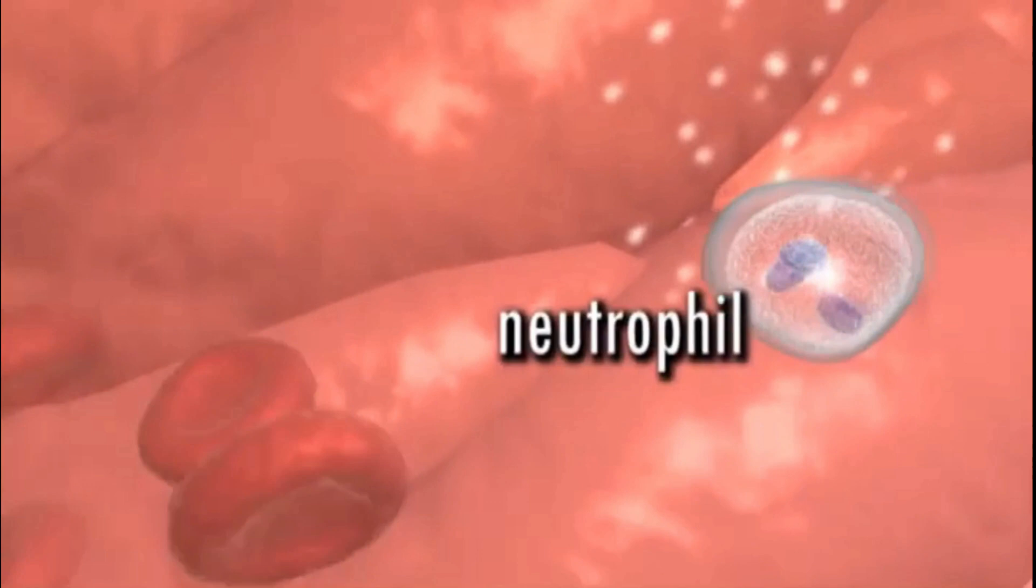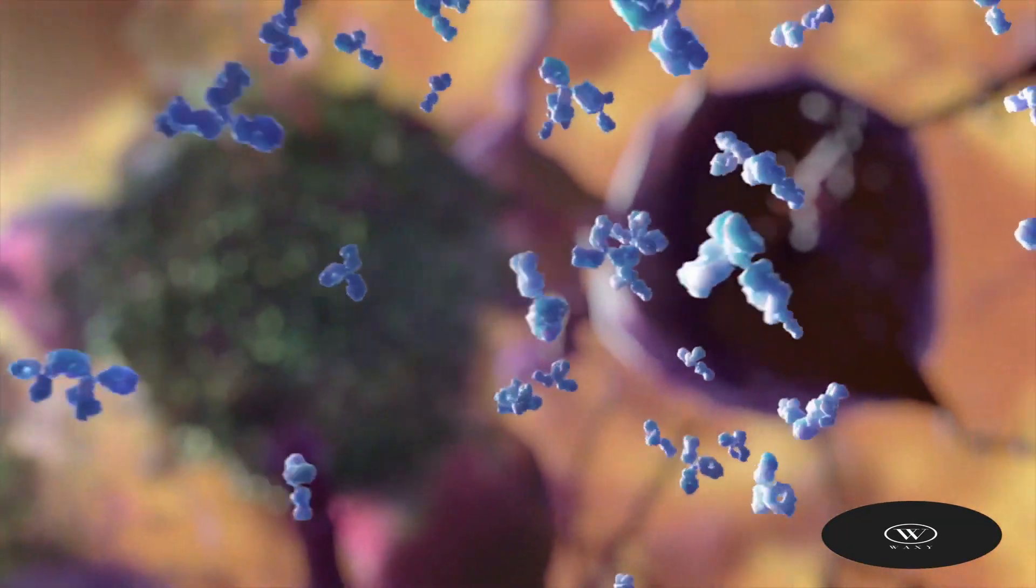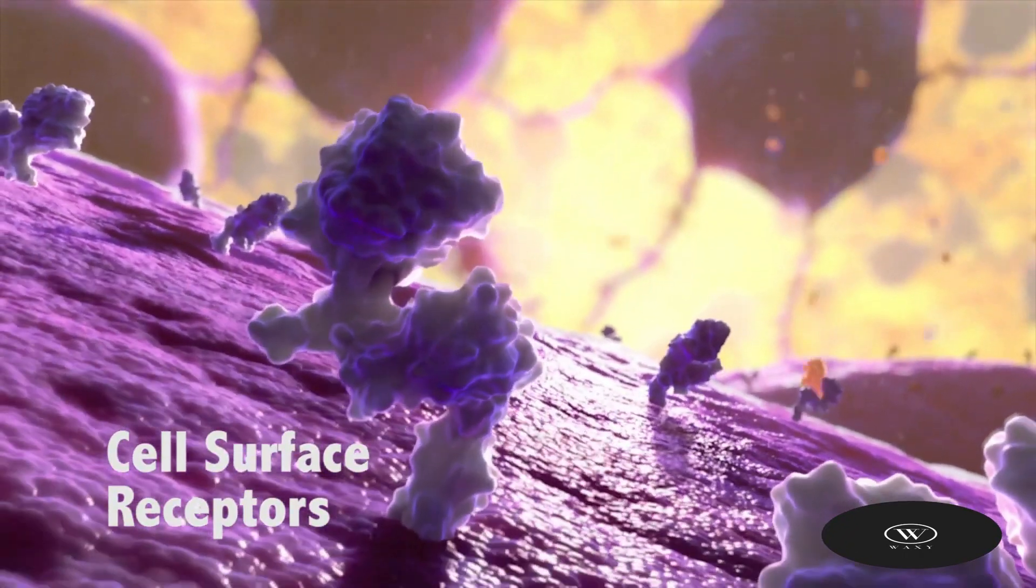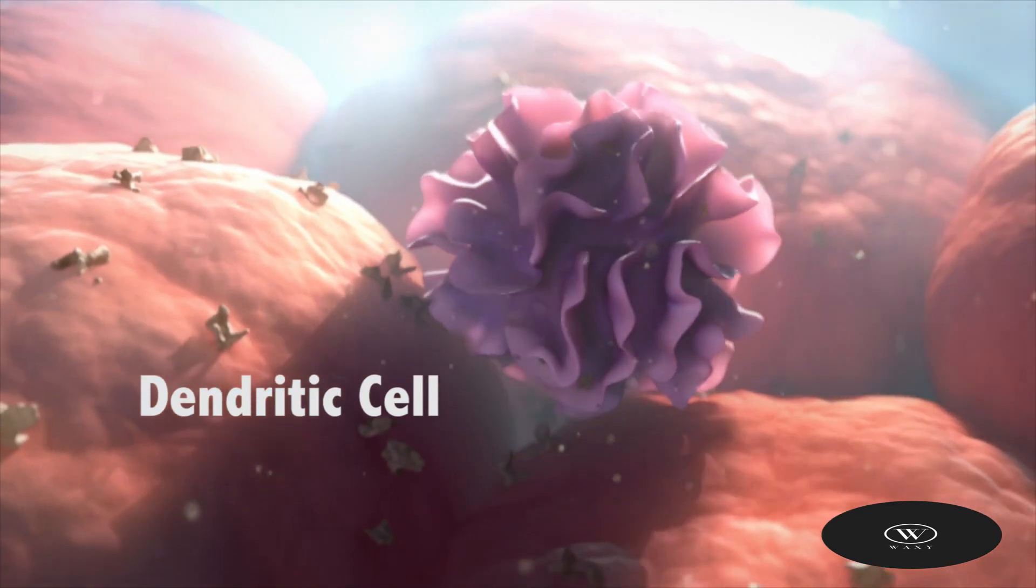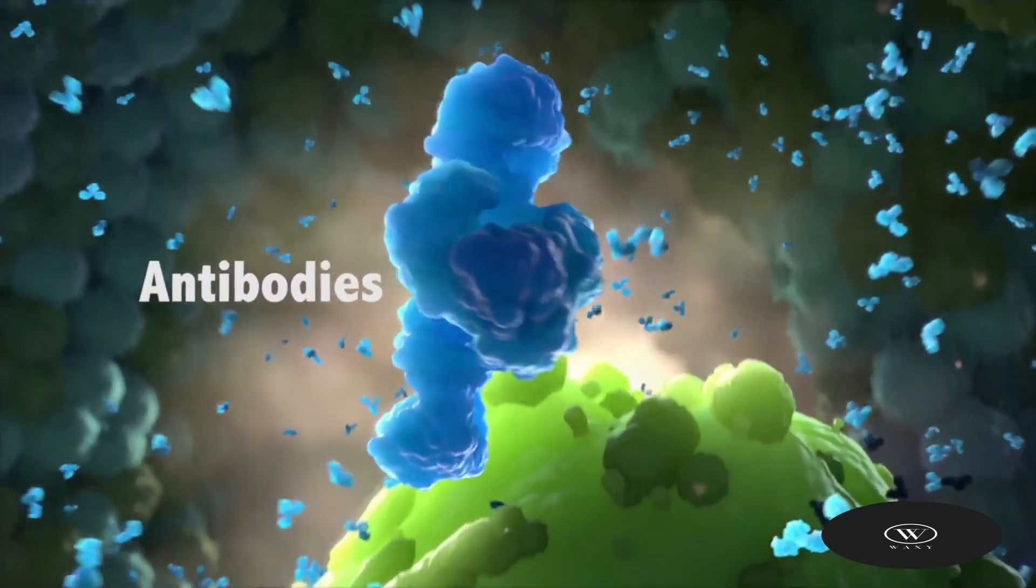This invasion, called an infection, is what causes illness. Our immune system uses several tools to fight infection. Blood contains red cells, which carry oxygen to tissues and organs, and white or immune cells, which fight infection.